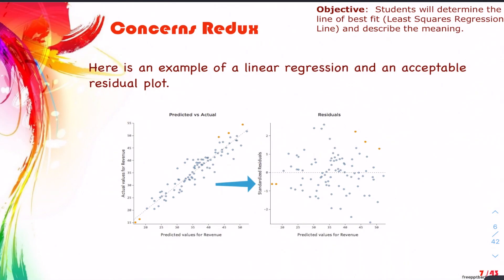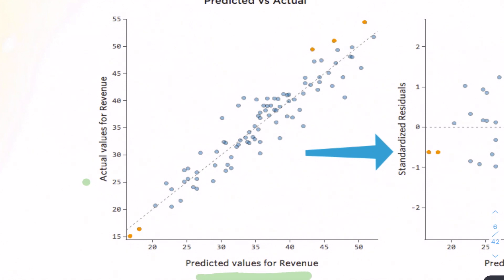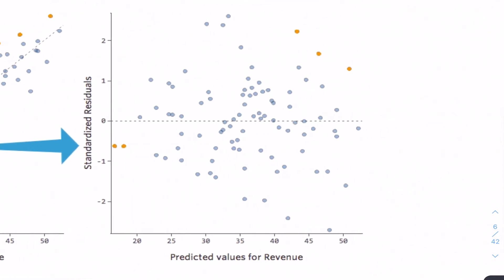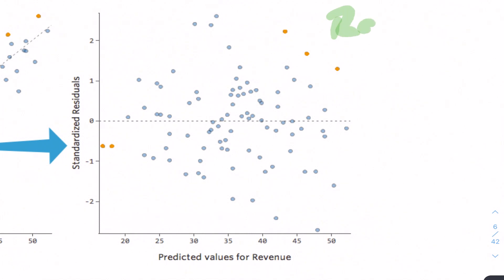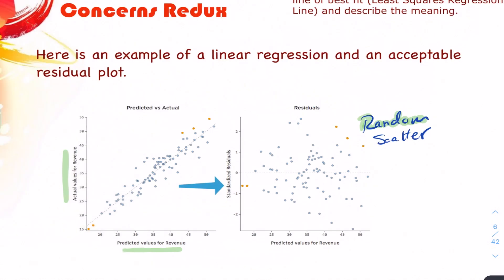Here's another example of a linear regression with an acceptable residual plot. If we looked at predicted values for revenue versus actual values for revenue — predicted versus actual — the data looks like a moderately strong positive linear association. And with our residual plot, we see random scatter. If you pick any point at a given x-value, it may be above or below. Overall, we don't see errors in our residual plot, which is a good thing.